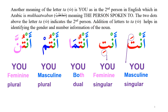The second person is called 'mukhatabun,' written with ta. As you can see in the words: anta, anti, anthuma, anthum, anthuna — all of them mean 'you,' but in different ways. Anta means 'you' in the masculine sense, and anti means 'you' in the feminine sense. In anti, the kasra is below the ta, because the average height of the female is less than the male. So men are represented by the fatha, while females are represented by the kasra.